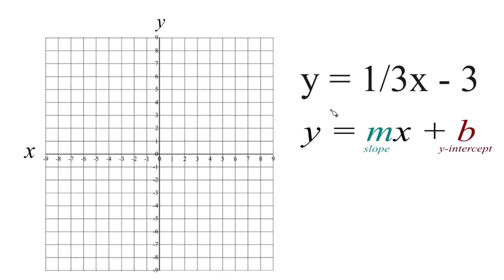All right, let's graph the linear equation y equals one-third x minus 3. You can do it two ways: slope-intercept form or a table of values. We're going to use slope-intercept form in this video. You get the same graph either way.